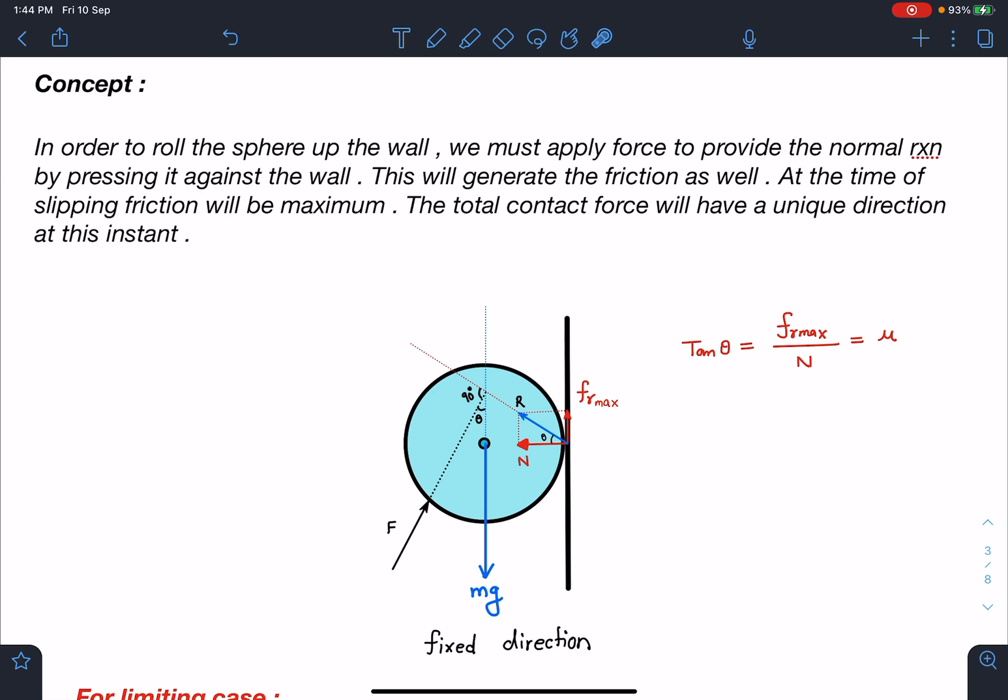At the instant of slipping, that means this is in static equilibrium and friction has reached its maximum value, then the total contact force will have a unique direction. I have used this concept in the last problem also. At the time when this sphere is on the verge of slipping, you will find out that tan theta is fr by n and its value is mu. fr is mu into n. So now this direction is fixed. It will be always at angle of friction. It is a very nice method and it helps reduce the calculation significantly.